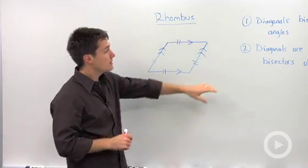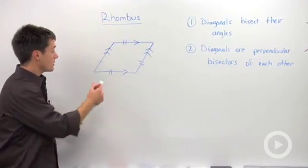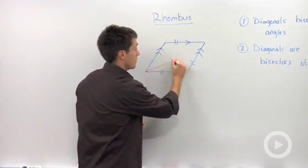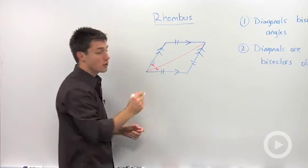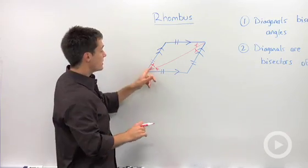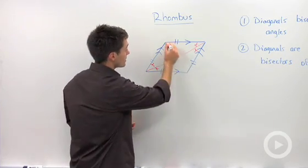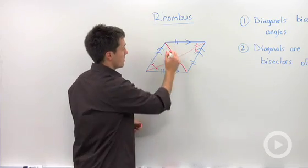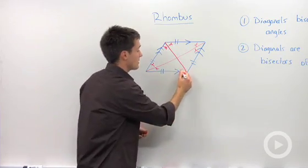The second key thing is that the diagonals bisect the angles. So if I drew in a diagonal here, it will bisect this angle into two congruent angles, and it'll do the same thing to that angle. So these four angles will all be congruent to each other. If I drew in the other diagonal, it will bisect that angle, and it'll bisect this angle as well.